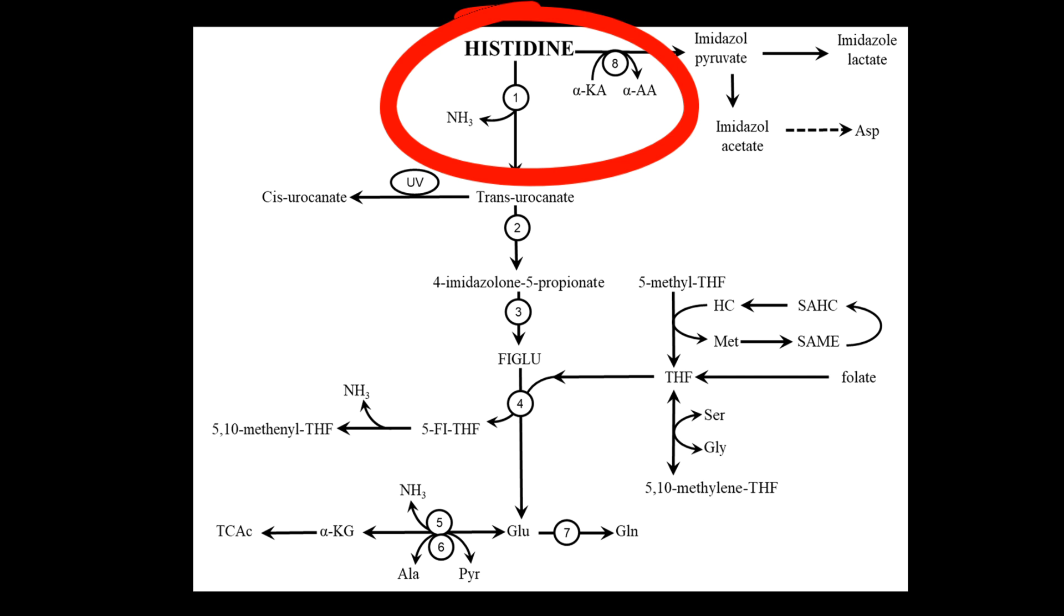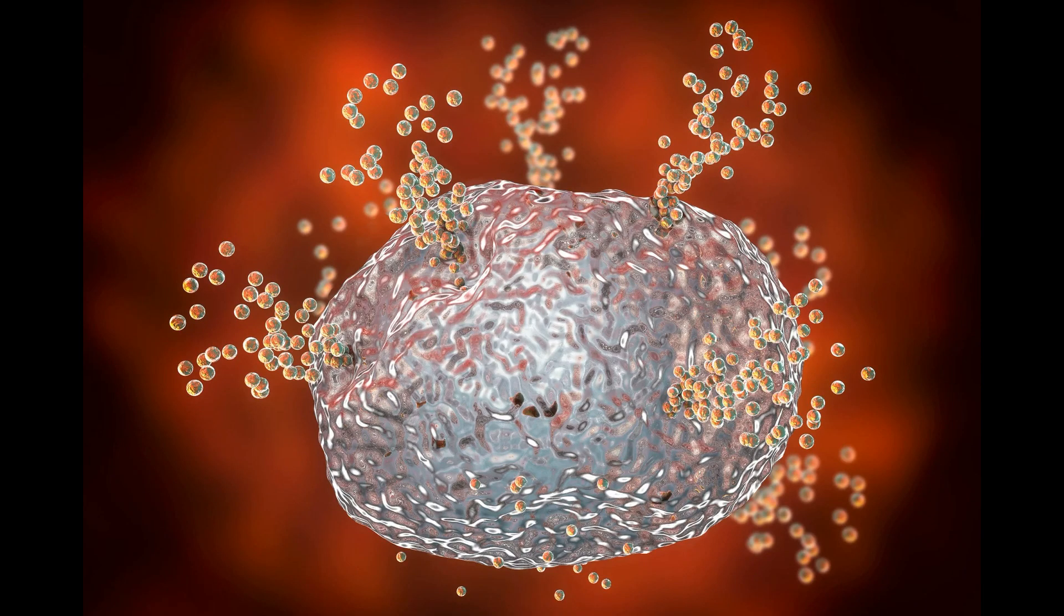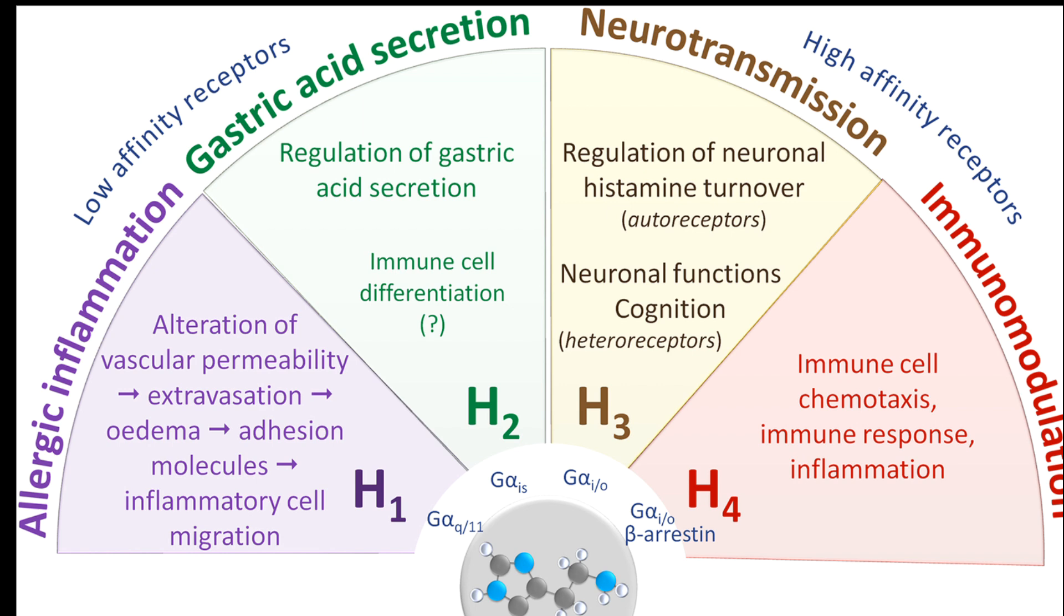Histamine is synthesized from the amino acid histidine by the enzyme histidine decarboxylase. Once formed, it is stored in vesicles and released upon neuronal activation. Histamine receptors are classified into four types, H1, H2, H3, and H4. Each receptor type has distinct functions and locations within the brain and body.